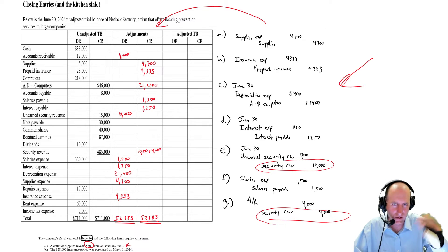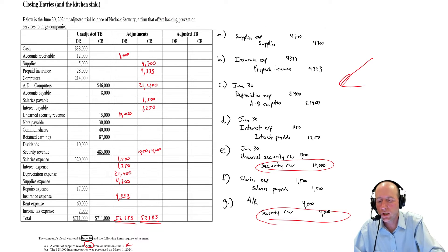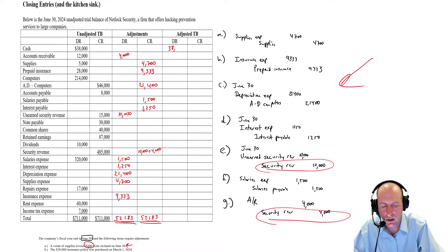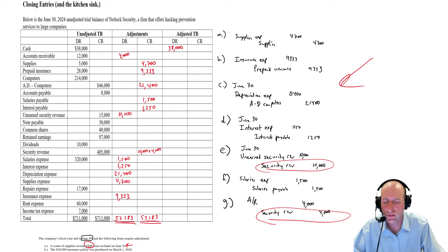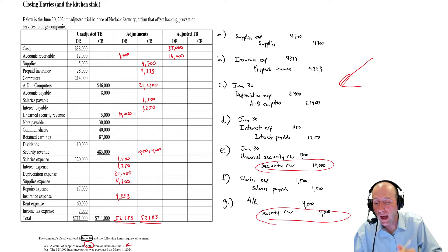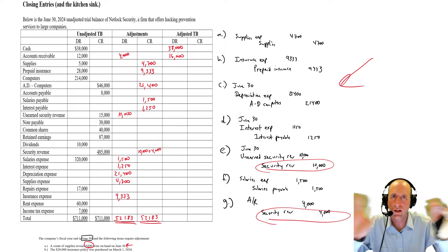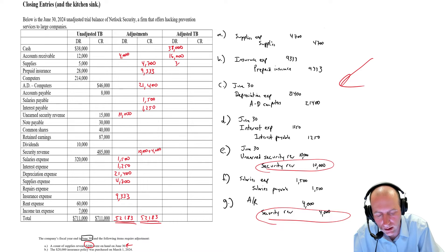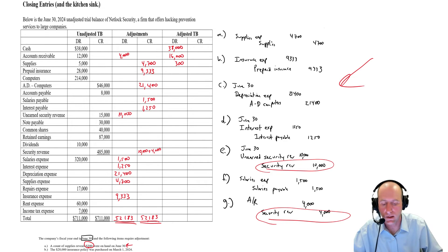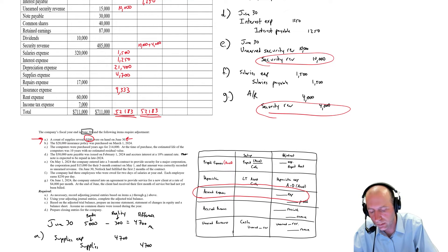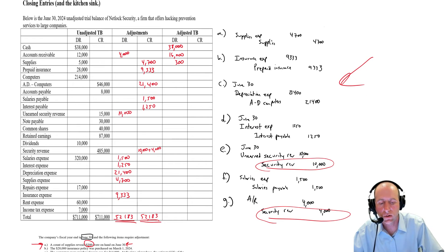This has to add up, and if it doesn't, stop — you've made a mistake. Moving over to the adjusted trial balance now. With each row, we just add our unadjusted plus our adjustments. Cash $38,000 debit, no adjustments, so it ends as $38,000 debit. Accounts receivable $12,000 debit plus $4,000 debit is $16,000. Supplies has a debit of $5,000 and a credit adjustment of $4,700, so $5,000 minus $4,700 is $300. A count of supplies reveals $300 were on hand on June 30th — our accounting records show exactly that.